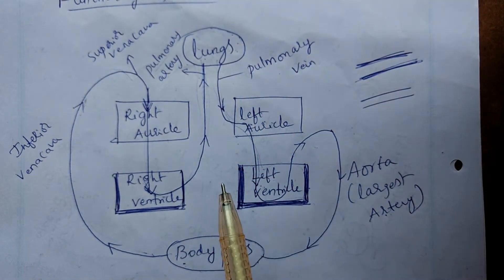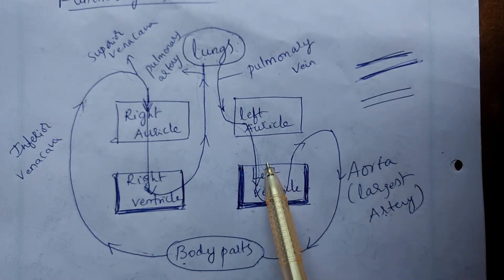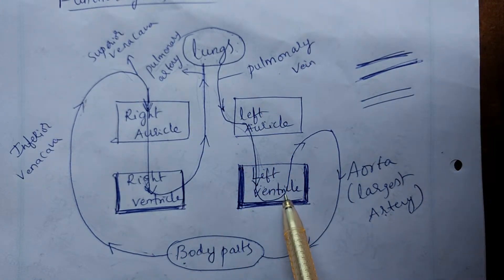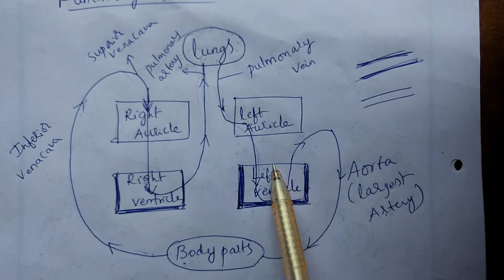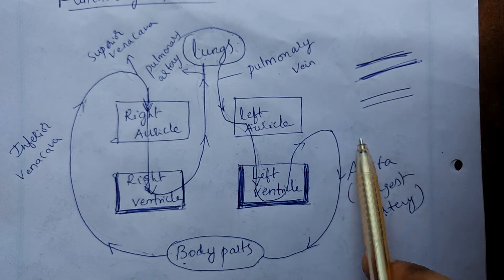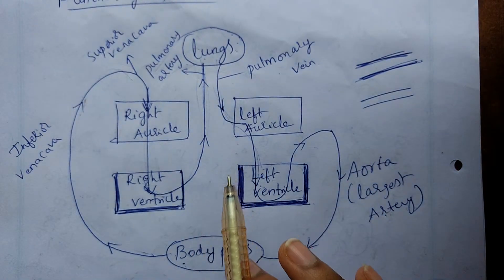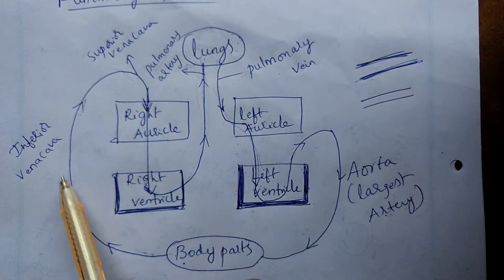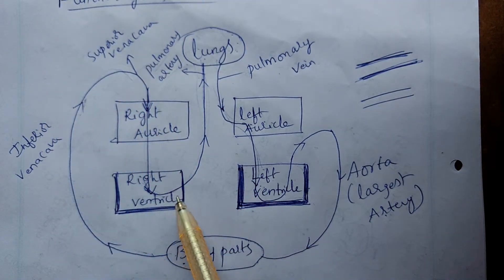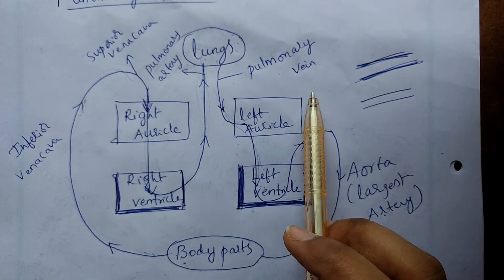The pulmonary artery connects to the left auricle. From the left auricle, blood goes to the left ventricle, and the left ventricle pumps pure blood to the body parts. Veins and arteries are very important in this process.